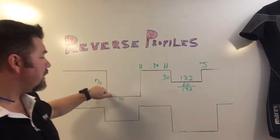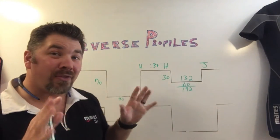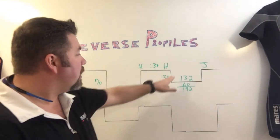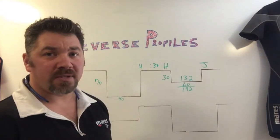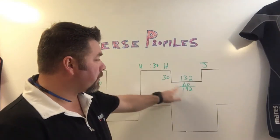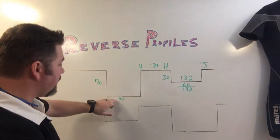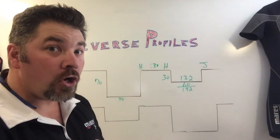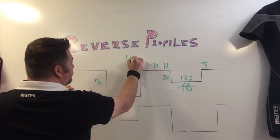So on my typical dive: 70 feet for 40 minutes, pressure group H, 30-minute surface interval, then second dive 30 feet for 60 minutes. Adding my residual gives a total of 192 minutes of nitrogen buildup — 30 feet for 192 minutes is pressure group J. My total actual bottom time is 40 minutes plus 60 minutes — that's 100 minutes underwater total.